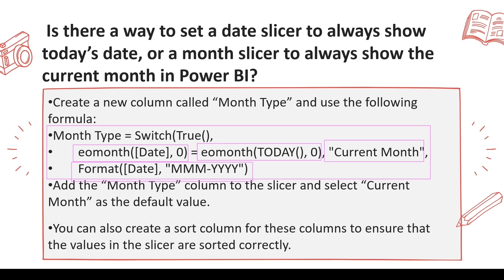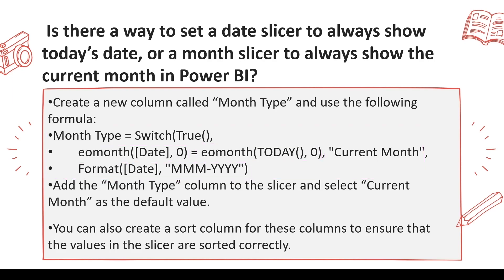One thing to note: this doesn't mean the slicer will display today's exact date or current month's date as a label — you won't see that directly. You may need to use a card or a text box to show today's value. But this approach ensures you don't have to manually change your slicer every day or every month. The same method applies to yesterday, last month end date, this month, next month, quarter, year — whatever you need.